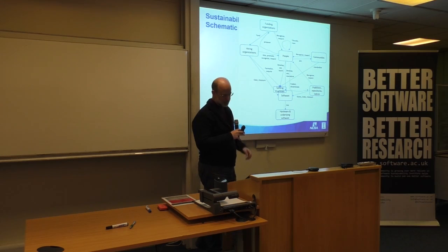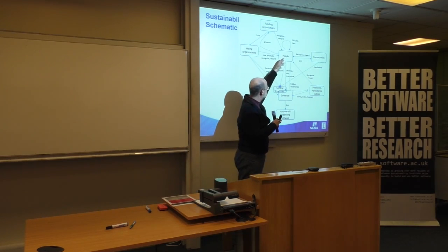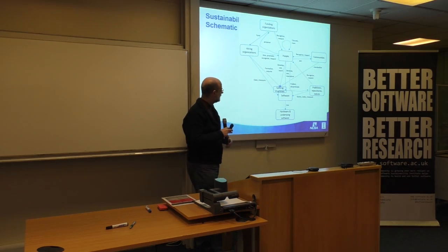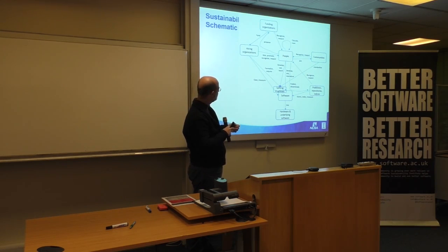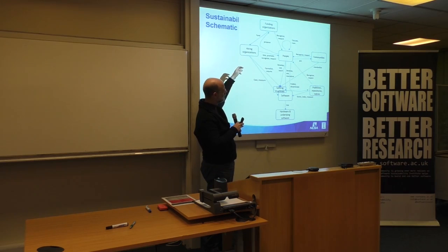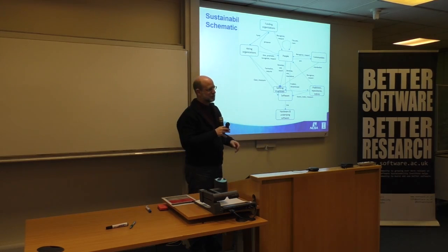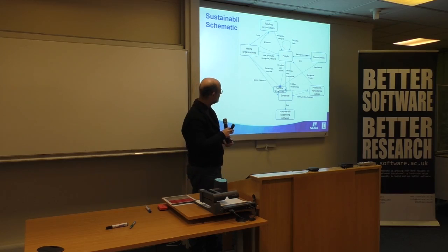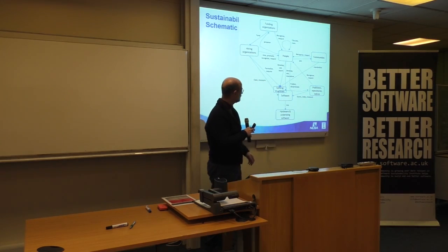Basically, my version of this is that at the core we have two things: people and software. These are the main things, and all of the other things are somewhat peripheral to them. Funding organizations have a role in recognizing or rewarding people. Hiring organizations actually hire the people and get the funding in most cases. We have software engineering processes that are overlapping with software — in some sense being formalized by hiring organizations, developed by people, and used by communities. Communities have a role in standardizing activities as well as recognizing and rewarding people. Publishers, repositories, and indices have a role in the software world as well.